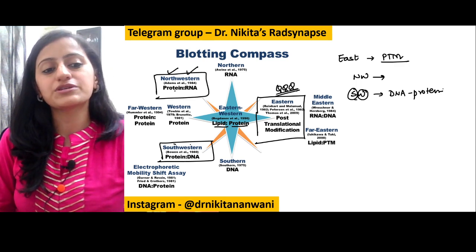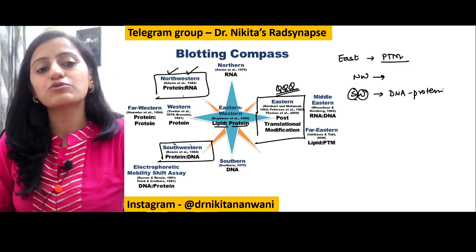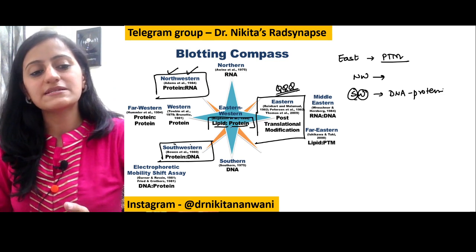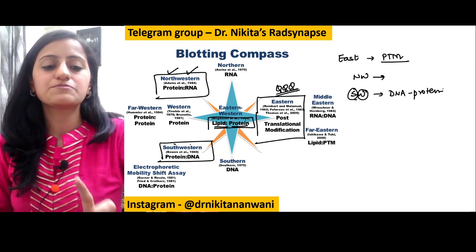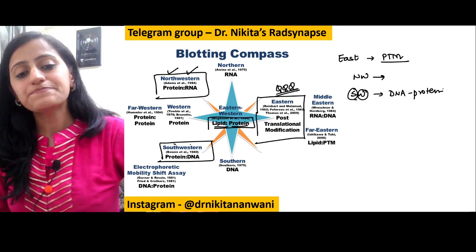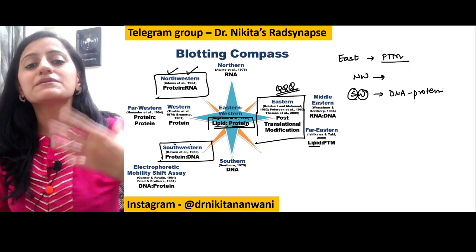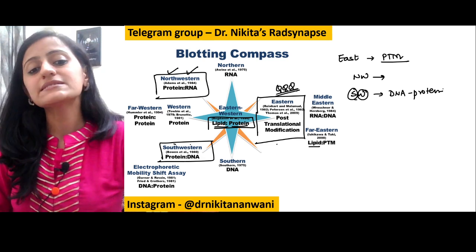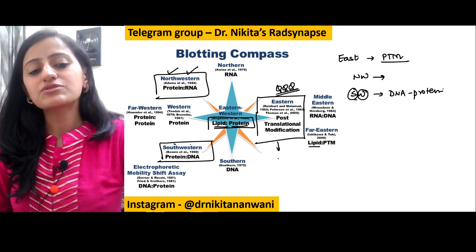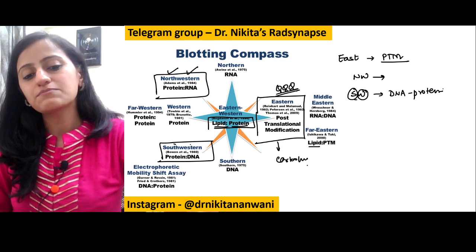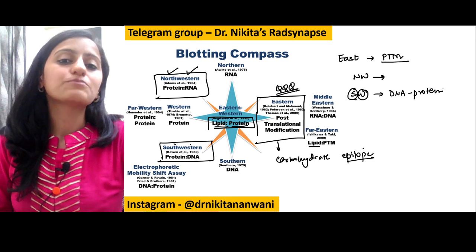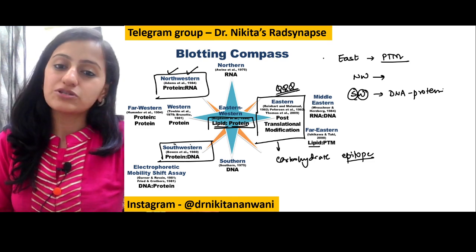Similarly, Northwestern: North is RNA, West is proteins, so it is the interaction between proteins and RNA. Eastern-Western is for lipid and protein — West is proteins, Eastern involves the lipid modification of proteins. Also important: Eastern blotting looks for the presence of carbohydrate epitopes in proteins.